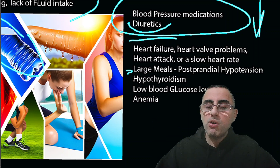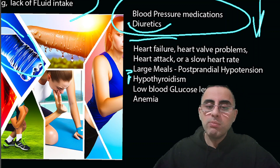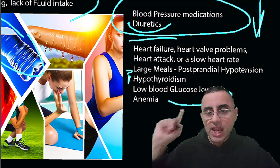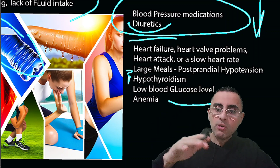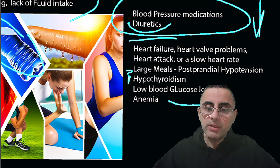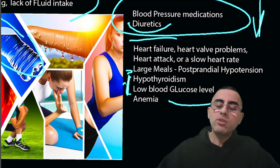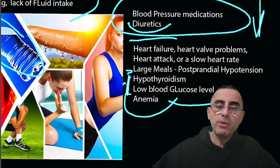Large meals can also cause hypotension — when you eat a lot, blood flow is directed toward the digestive system, and this is called postprandial hypotension. Endocrine problems such as hypothyroidism, low blood glucose, and diabetes can also cause low blood pressure. Both low and high blood glucose can contribute, though low blood glucose is more common.